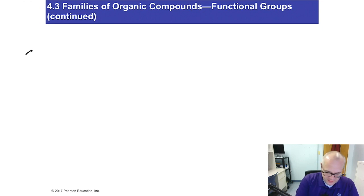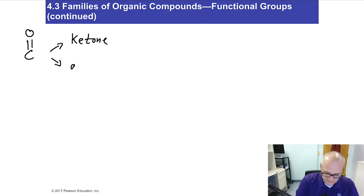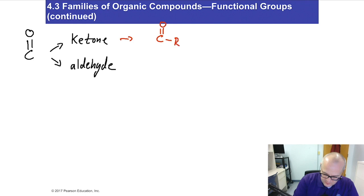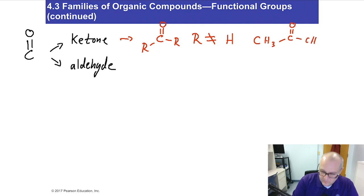Next, we're going to talk about carbonyl-containing classes: ketone and aldehyde. They both contain carbonyl. For a ketone, you have a carbonyl with R on both sides, where R cannot be hydrogen. So that's a ketone because you have a carbonyl and neither side of the carbonyl is a hydrogen.